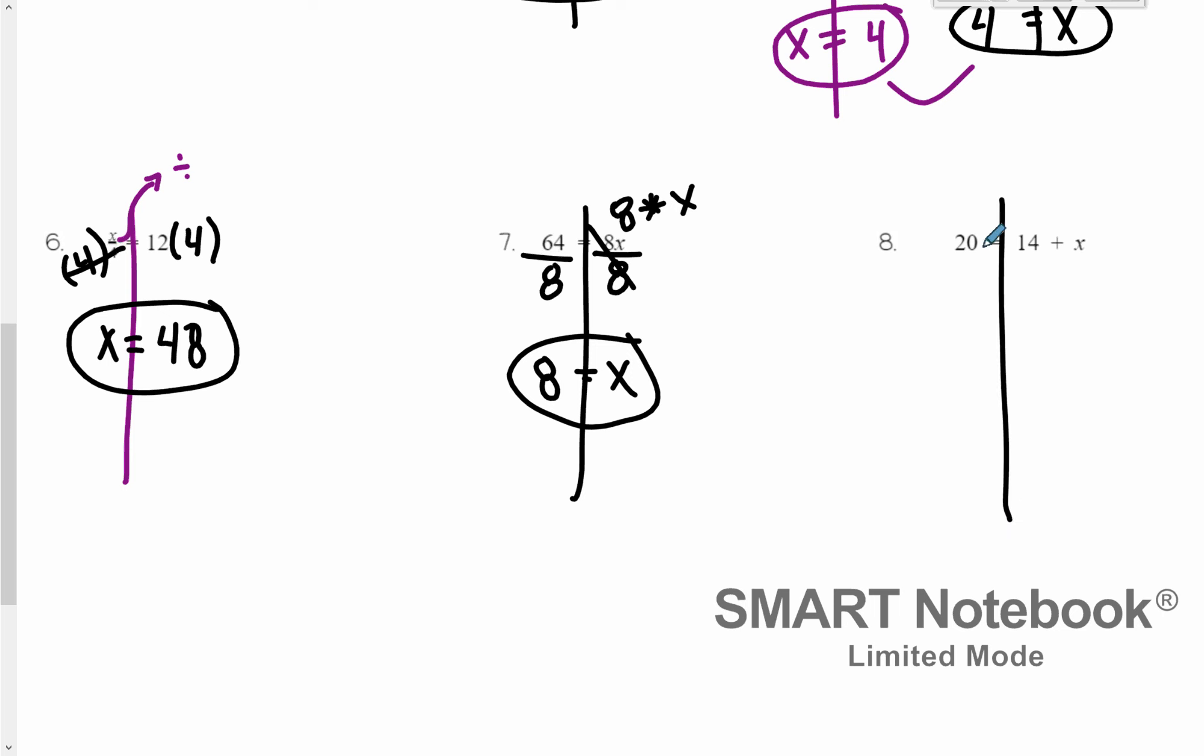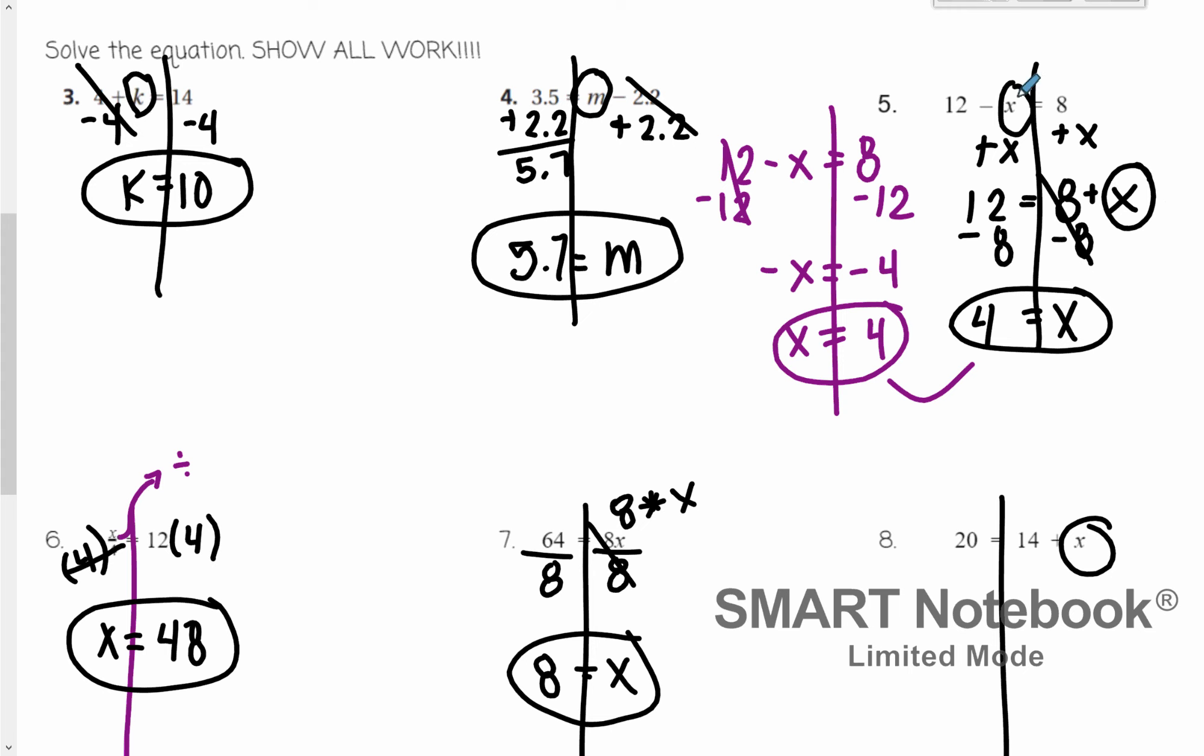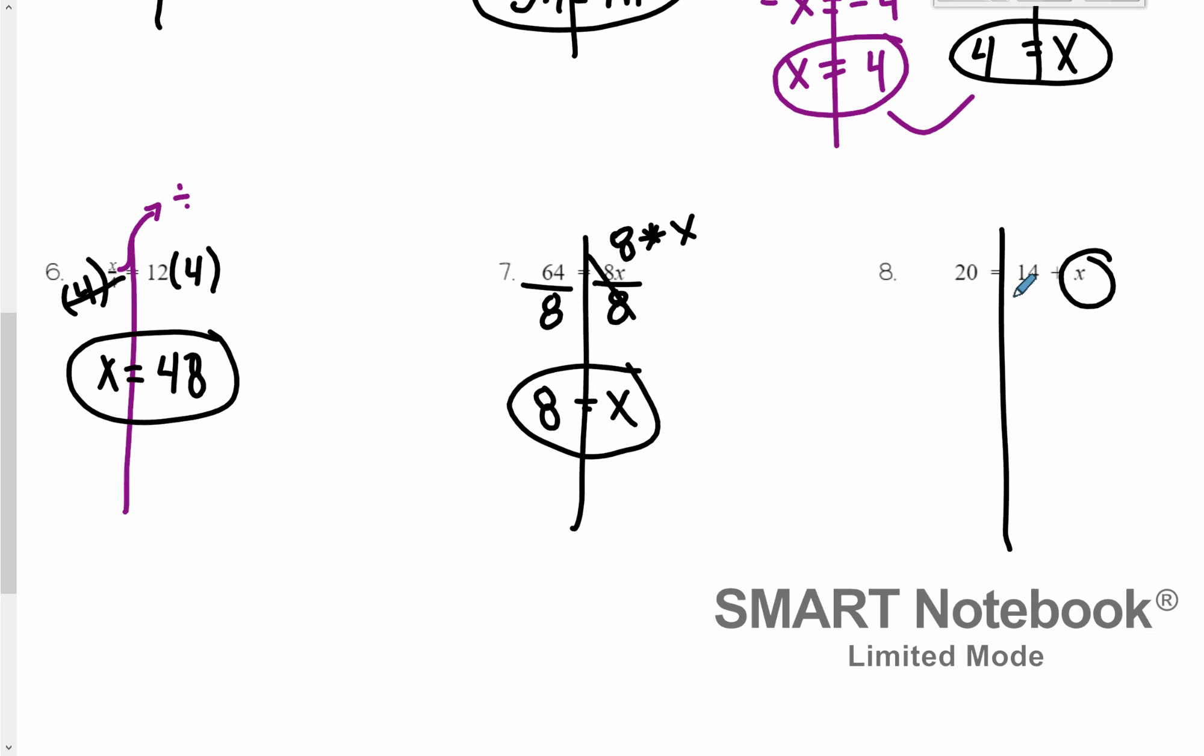Last but not least, we have 20 equals 14 plus x. Circle my x. I need to get rid of a plus 14. Notice how this is different from the example up here because this is something minus x, a number minus x—a number plus x, we don't have to do those funky methods for because we can get rid of a plus 14. We just subtract 14. 14 minus 14 is 0. 0 plus x is just x. 20 minus 14 is 6. And that is all for a review on solving equations.